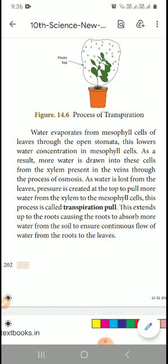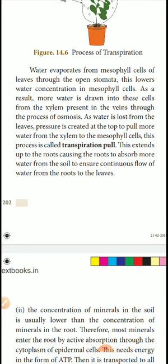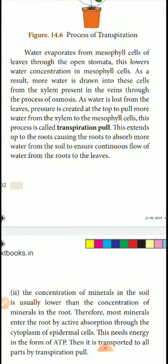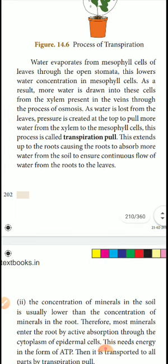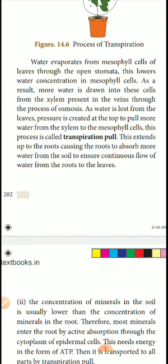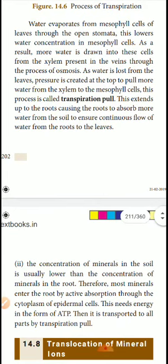What will happen? Water evaporates. The water is taken out and remaining water will be evaporated. Underline the word — water evaporates from the mesophyll cells through the open stomata. Stomata are present in the leaves. The lower water concentration of the mesophyll cells causes water to be drawn into these cells from the xylem present in the veins. More water is drawn into the cells from the xylem through the process of osmosis — an important exam question, underline that. The water lost from the leaves creates a pressure difference at the top and pulls more water through the xylem to the mesophyll. This process is called transpiration pull.